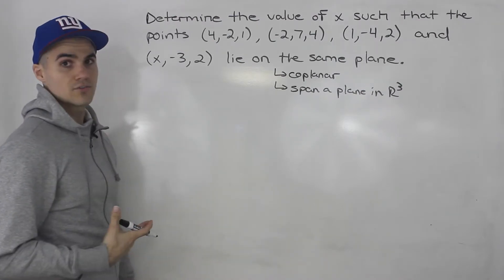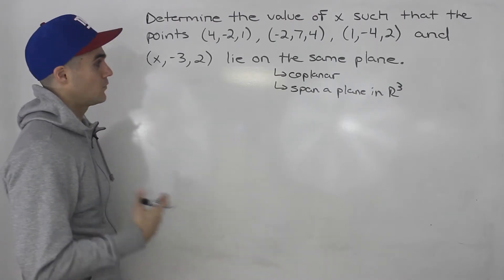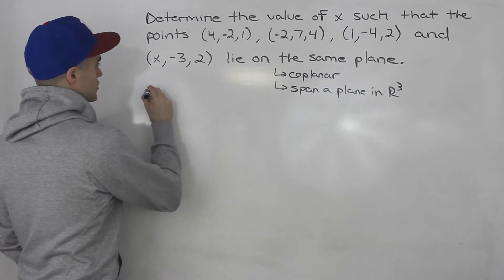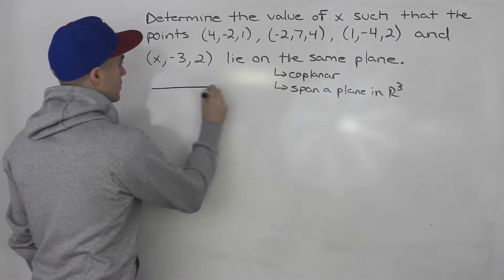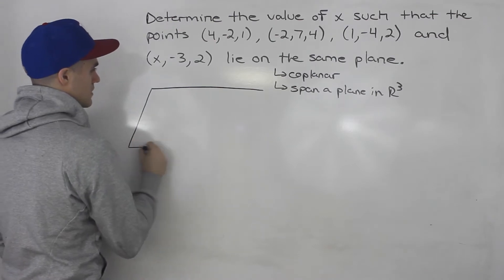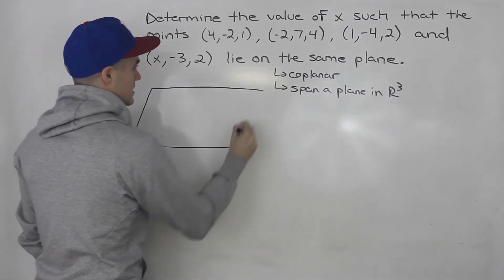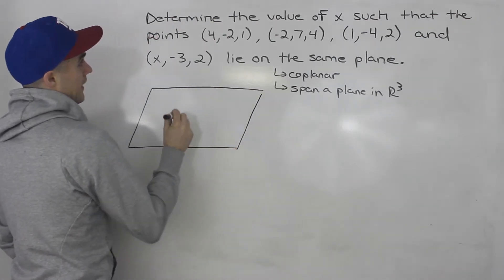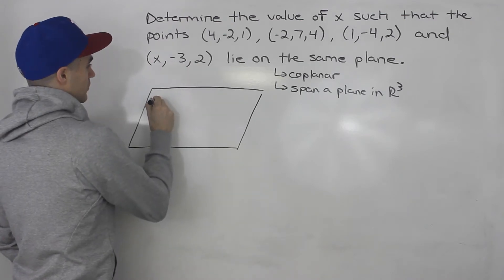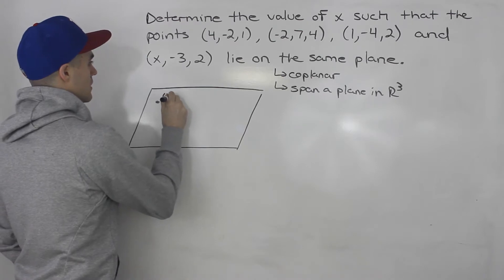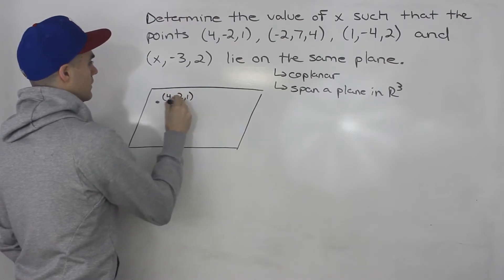This question is pretty difficult — one of the more difficult questions you'll get in this unit. Let's show what is going on visually first through a diagram. Let's say we have this plane here, and these four points are going to be on the plane. Starting with this point: 4, -2, and 1.